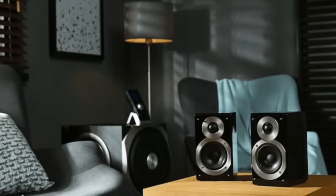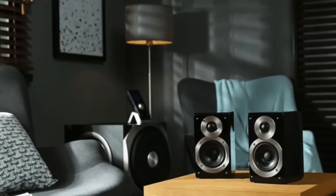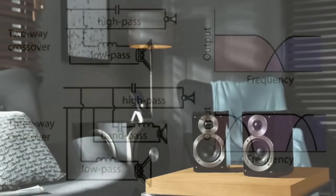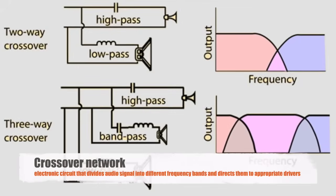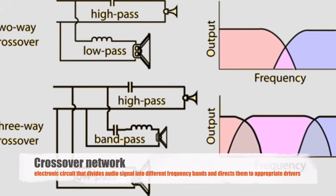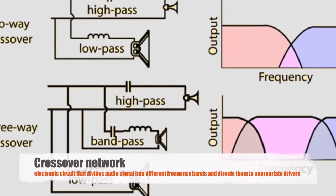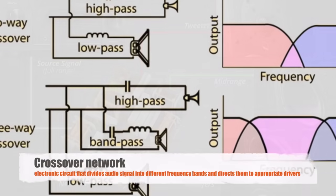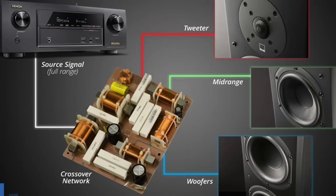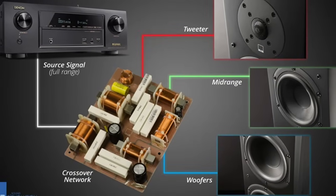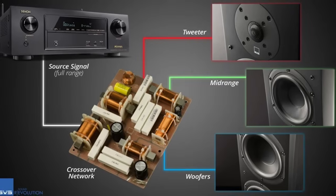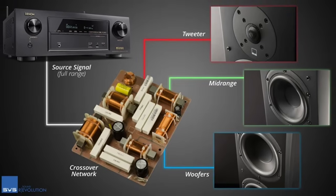To ensure that each driver receives the appropriate range of frequencies, loudspeakers use crossover networks. A crossover network is an electronic circuit that divides the audio signal into different frequency bands and directs them to the appropriate drivers. This division helps to optimize the performance of each driver, ensuring that the overall sound is clear, balanced, and natural.